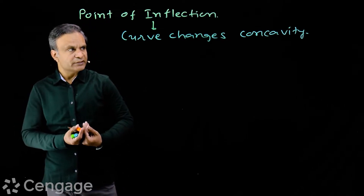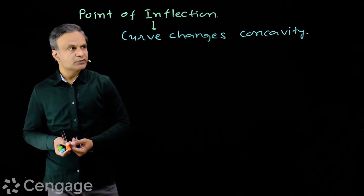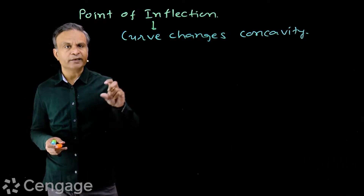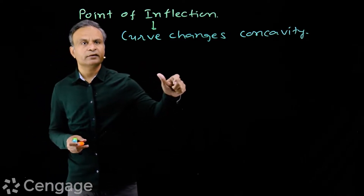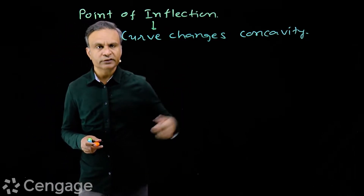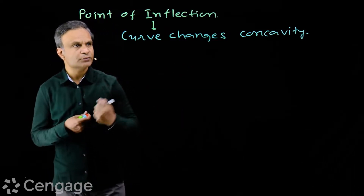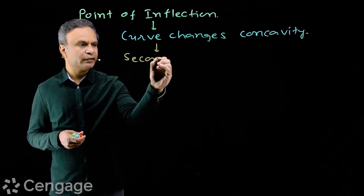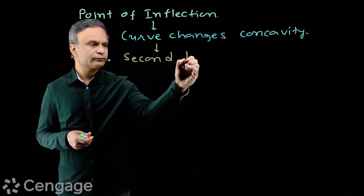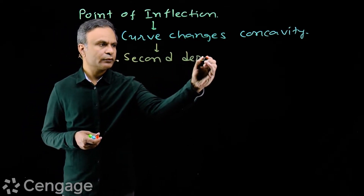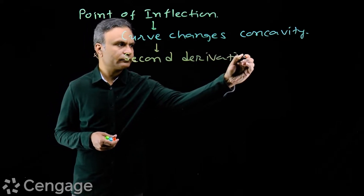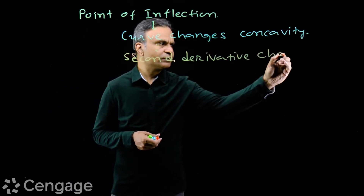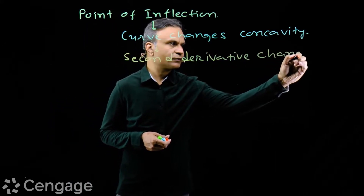If the graph is changing — the curve is changing its concavity — that means the sign of the second derivative will change. This is the point where the second derivative changes sign.